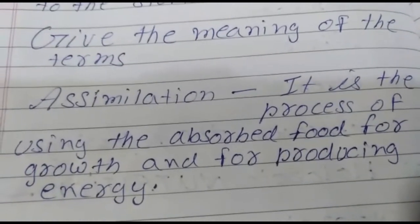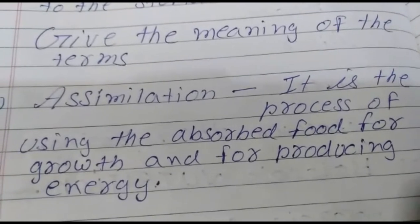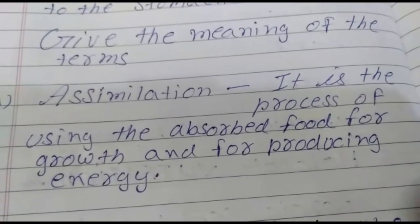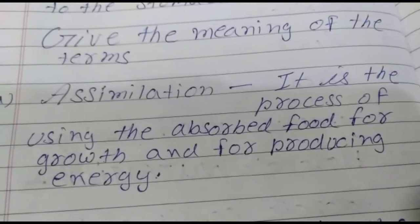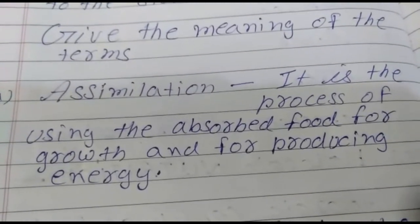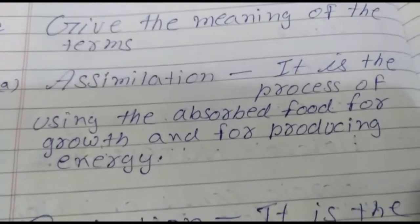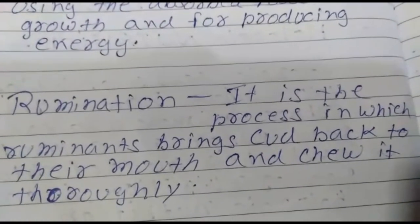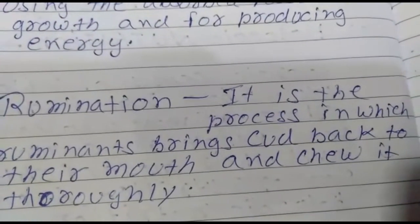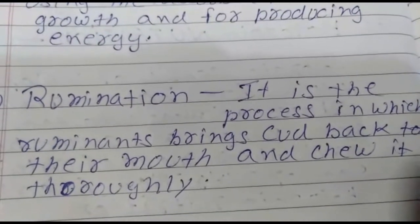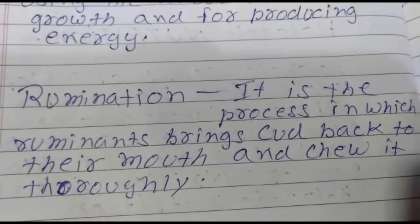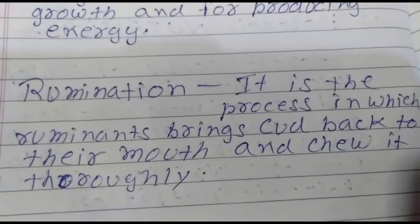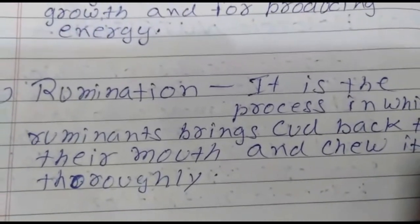Now give the meaning of the following terms. Assimilation is the process of using the absorbed food for growth and for producing energy. Rumination is the process in which ruminants bring cud back to their mouth and chew it thoroughly.